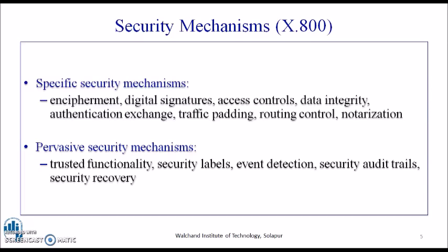The next important mechanism is digital signature. Just as we sign documents when sending them to someone — where the signature is an assurance of the certifying authority — over a network we need to make a digital sign. This is done by appending data or a cryptographic transformation of a data unit that allows the recipient to prove the source and integrity of the data unit and protect against forgery.